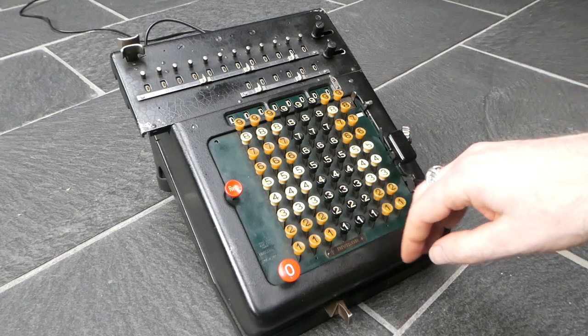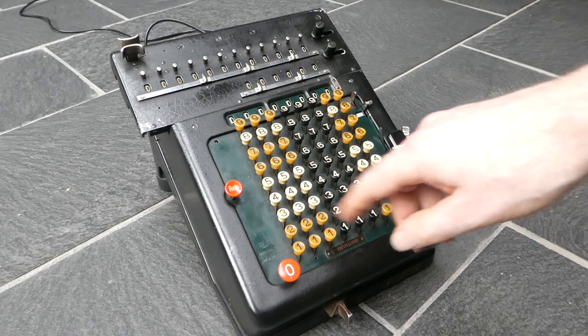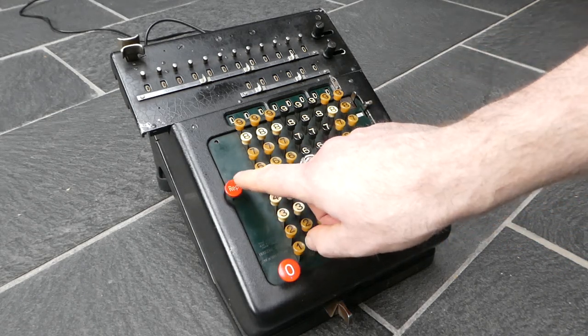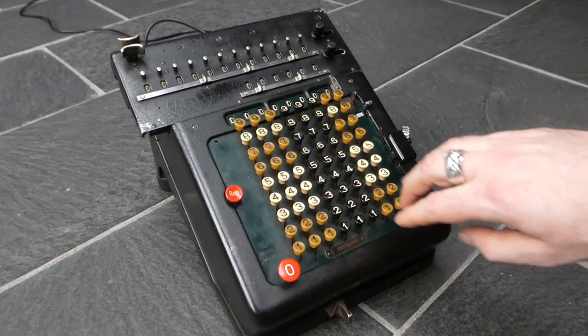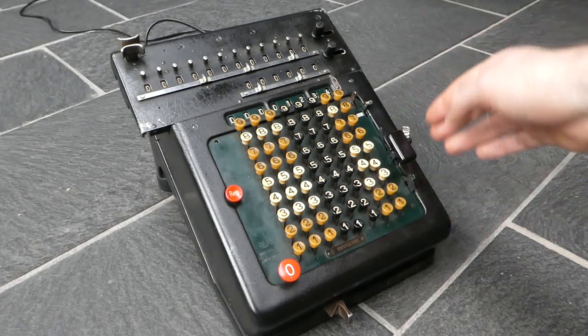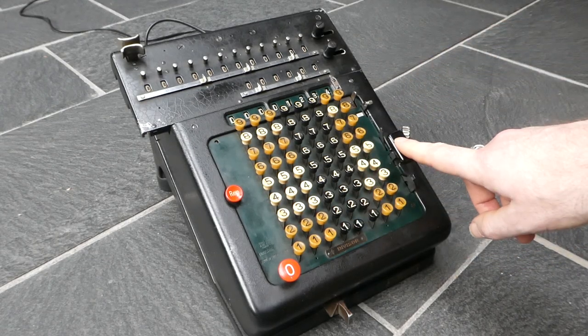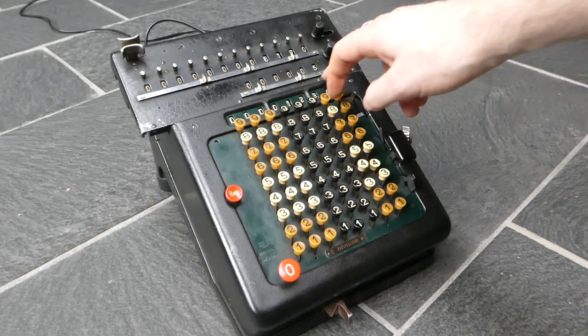If you want to do multiplications, then you can put this switch down, this button down. That stands for repeat, and now the keyboard will not be cleared automatically. So if you then hold down this button, it adds it continually.